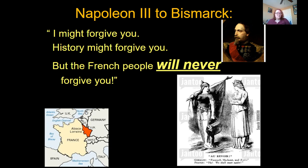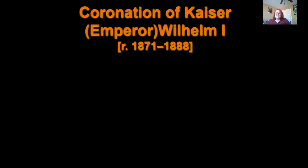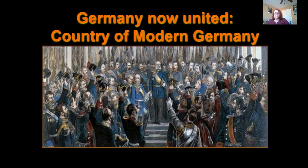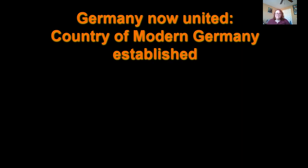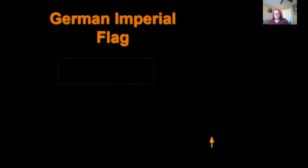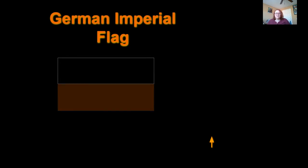The French would never, ever forget this. There's an image of what it would have looked like between Bismarck and Napoleon III at France's surrender. Napoleon III said to Bismarck: 'I might forgive you, history might forgive you, but the French people will never forget you.' It wasn't a threat — it was definitely a promise, because the French would never forget how Germany took this region from France.